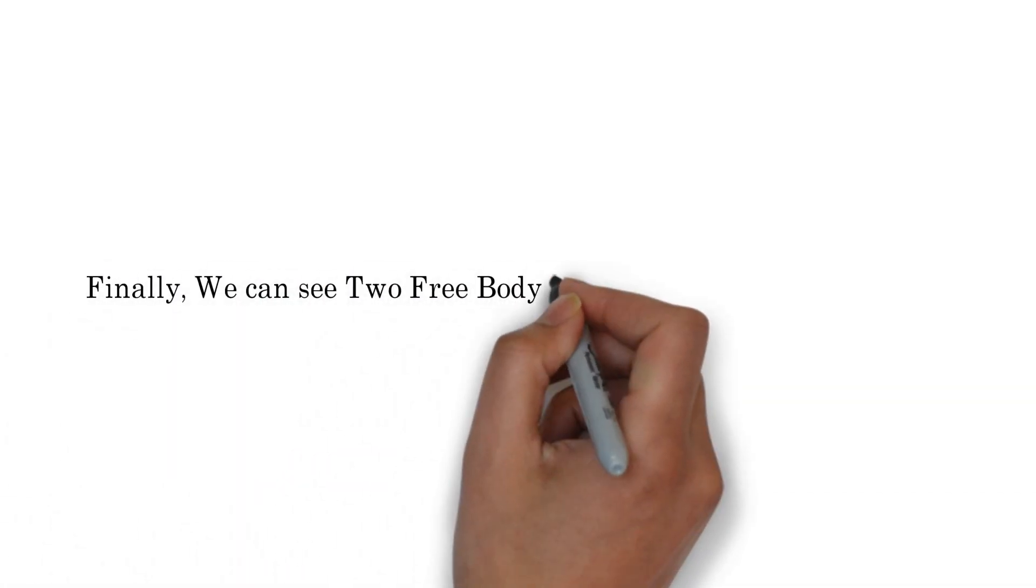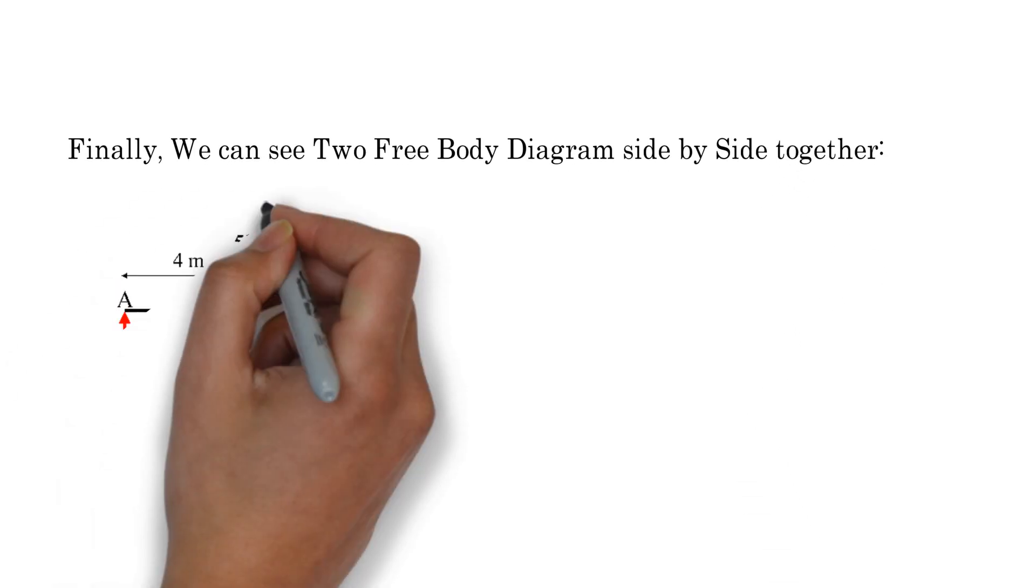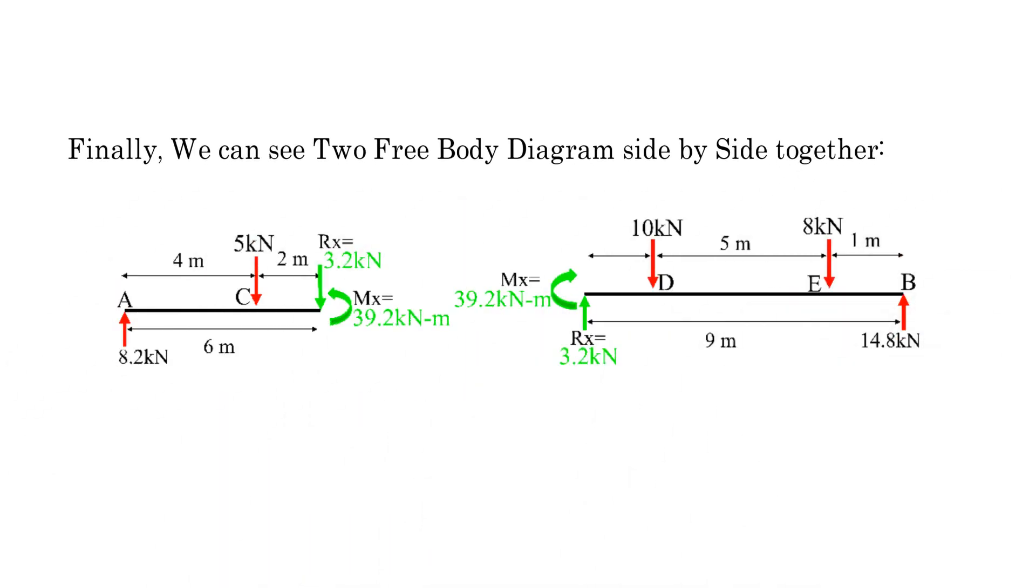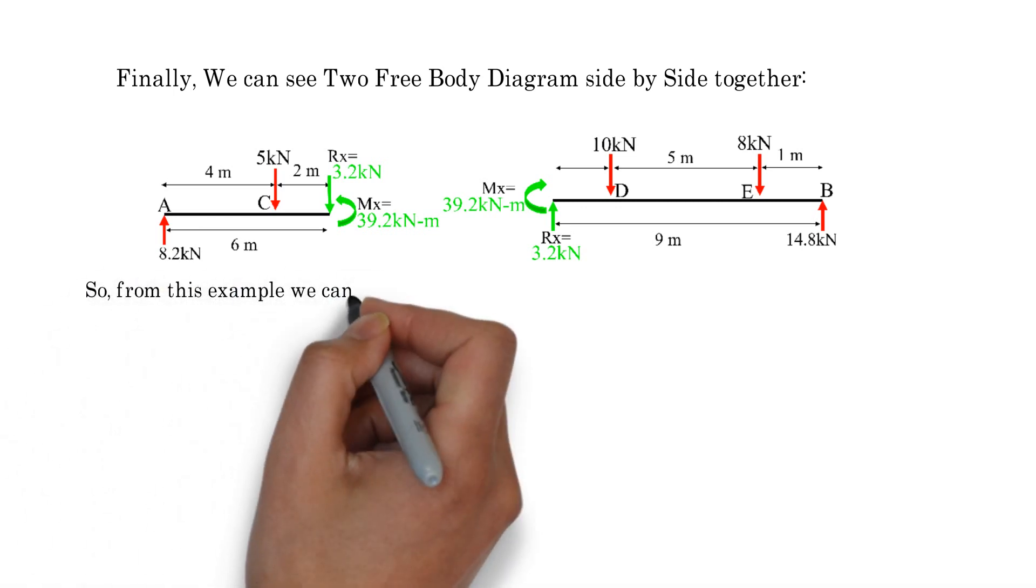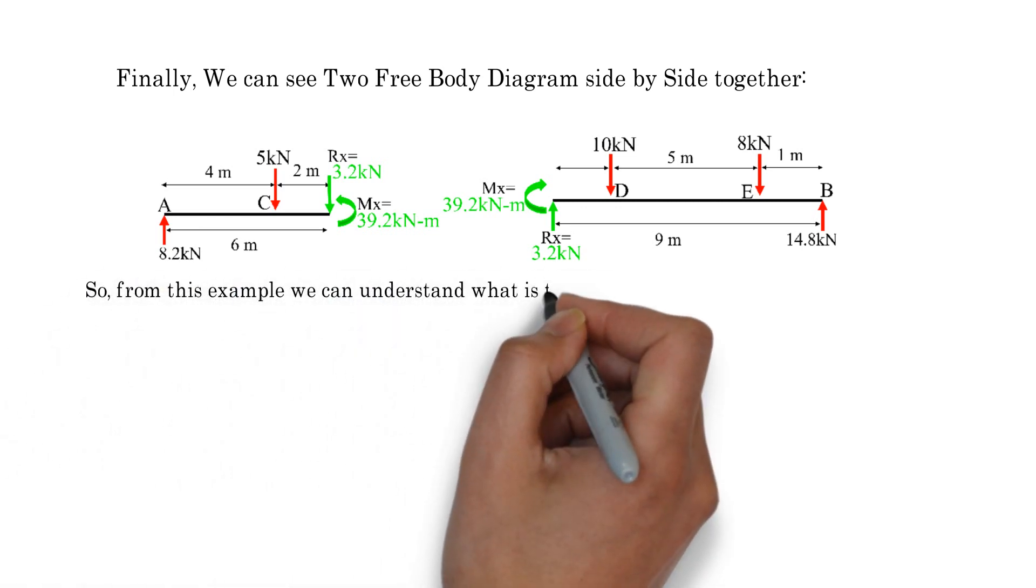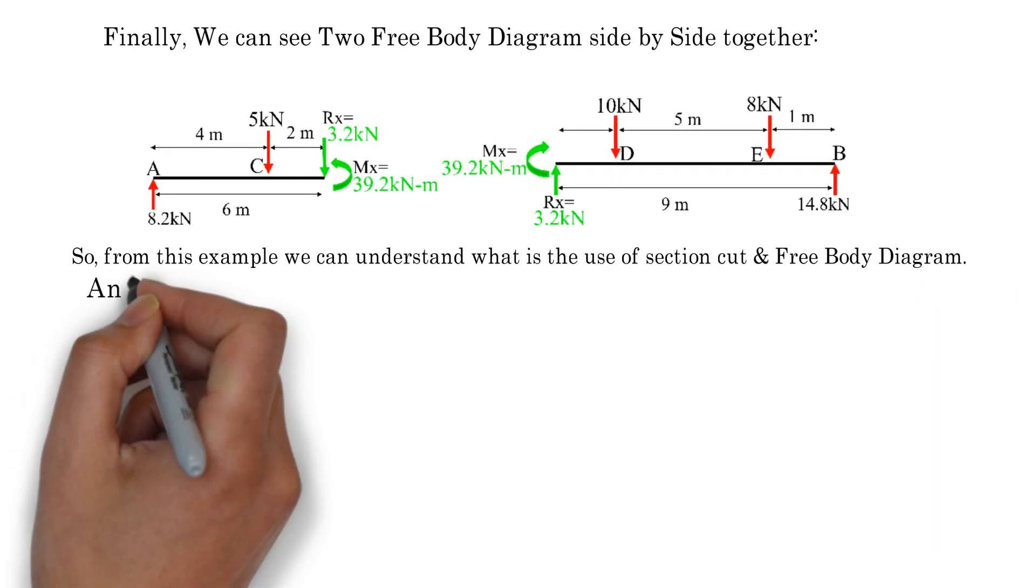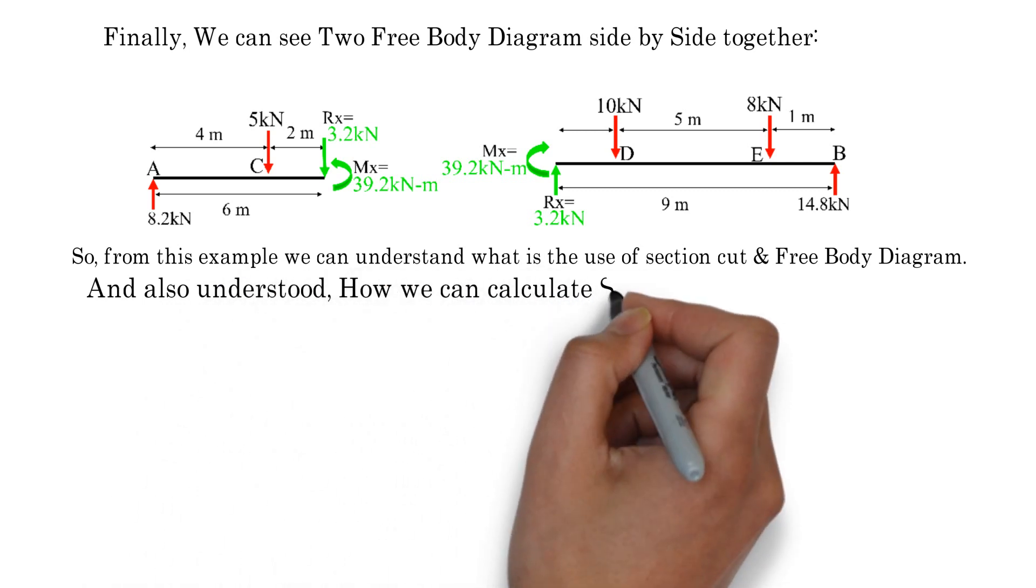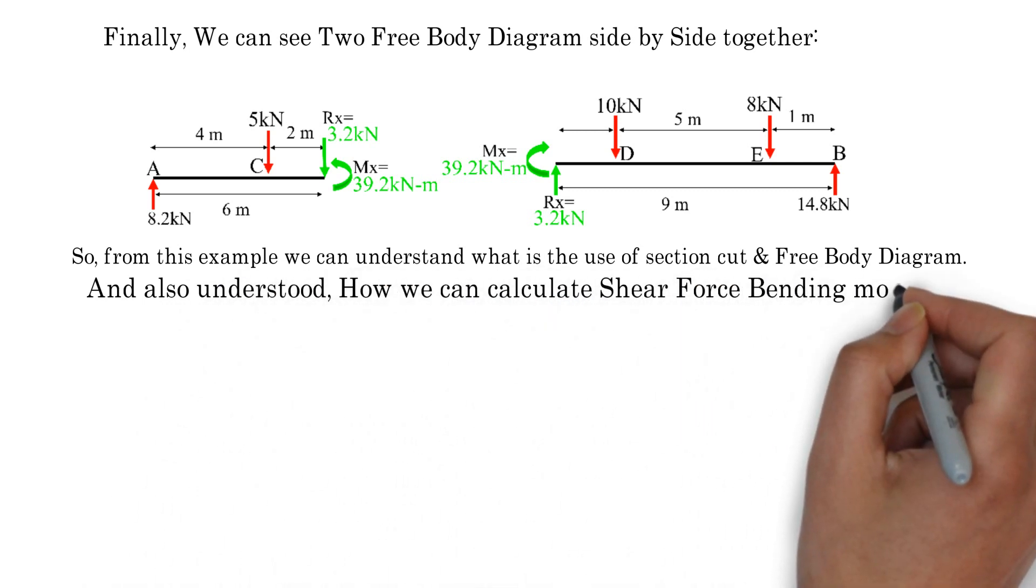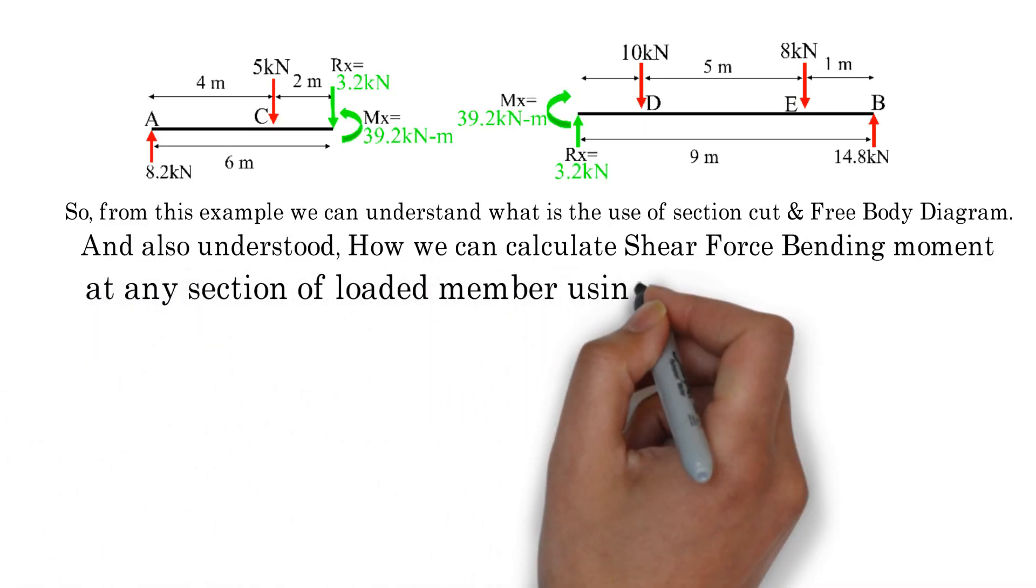We can see two free body diagrams side by side together. So from this example we can understand what is the use of section cut and free body diagram, and also how we can calculate shear force and bending moment at any section of loaded member using free body diagram.